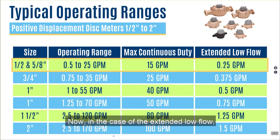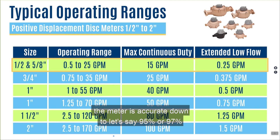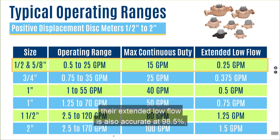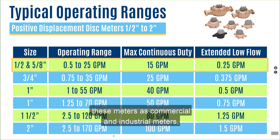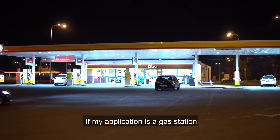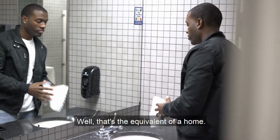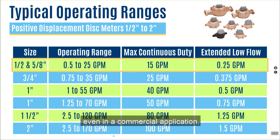For extended low flow, the manufacturer indicates accuracy down to a quarter of a gallon per minute — not necessarily plus or minus one and a half percent, but around 95% to 97%. Some manufacturers state that even at the five-eighths size, their extended low flow accuracy is 98.5% down to a quarter of a gallon per minute. Many times we don't think of these as commercial and industrial meters, but consider a gas station with only two bathrooms — that's the equivalent of a home in terms of fixture count. That would be a great use of this meter even in a commercial application.